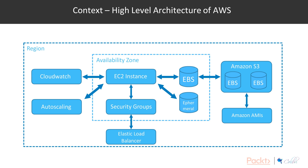There are a number of services considered multi-AZ or region-level services, such as CloudWatch and auto scaling. When you configure an EC2 instance you define the availability zone you want it to run in. But with CloudWatch and the Elastic Load Balancer, you just specify which region you want to run that service in — you don't actually specify an availability zone.